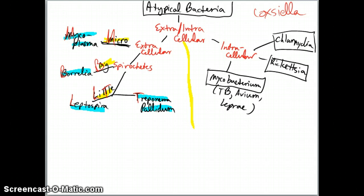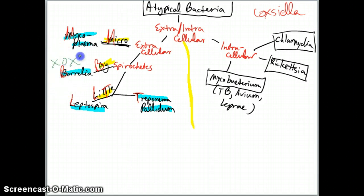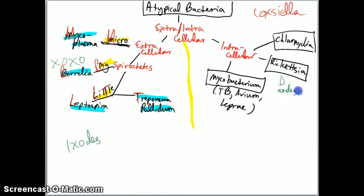Let's go on to Borrelia. Borrelia burgdorferi - that's known as Lyme disease. I like to say 'I XOXO Lyme burglars' because it is caused by the Ixodes tick. The Dermacentor tick causes Rocky Mountain spotted fever, and the Lone Star tick causes ehrlichiosis once we get into parasites. Those are your three ticks you definitely need to know. With Ixodes tick, you're going to have silver staining to find Borrelia.